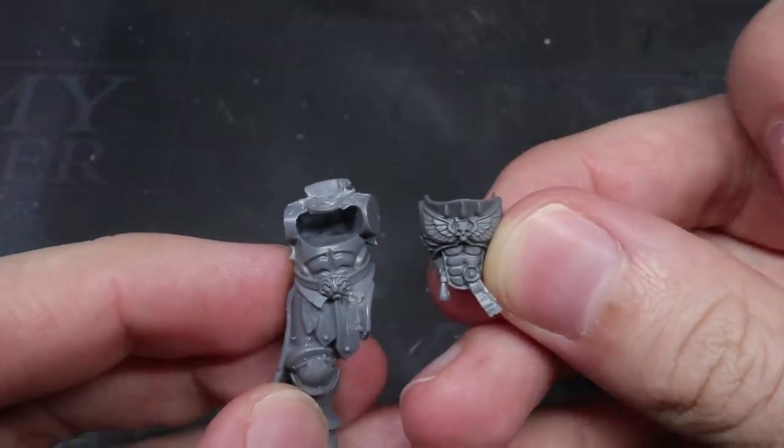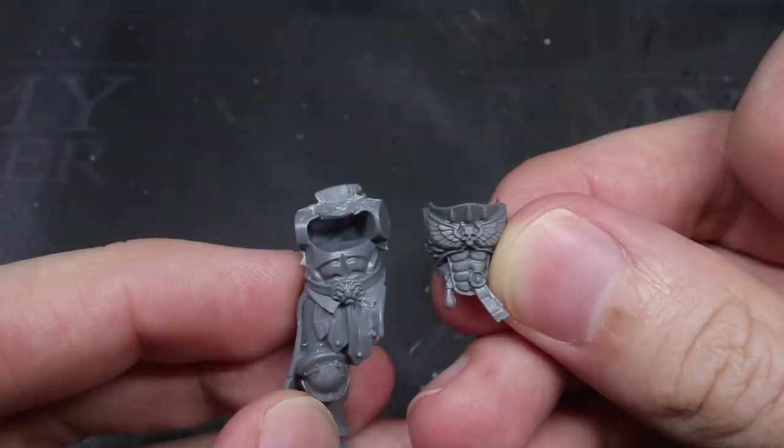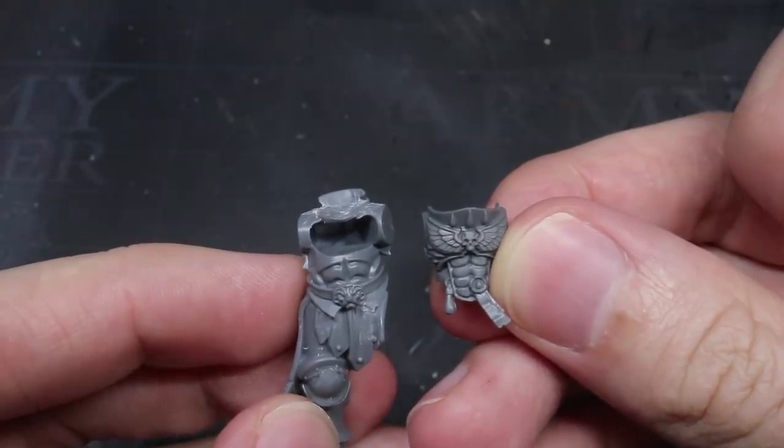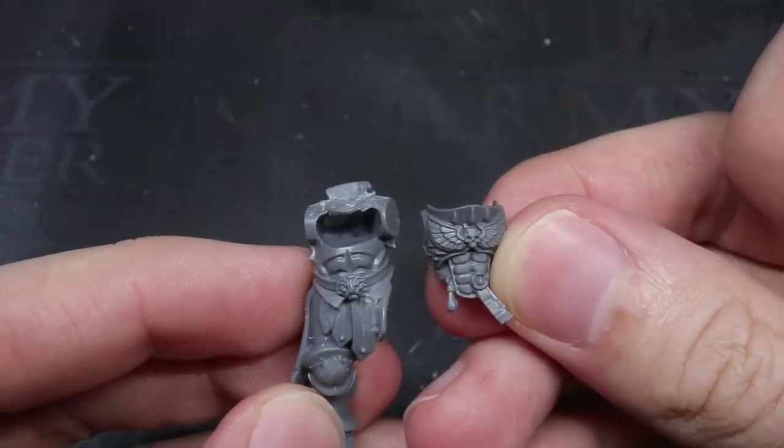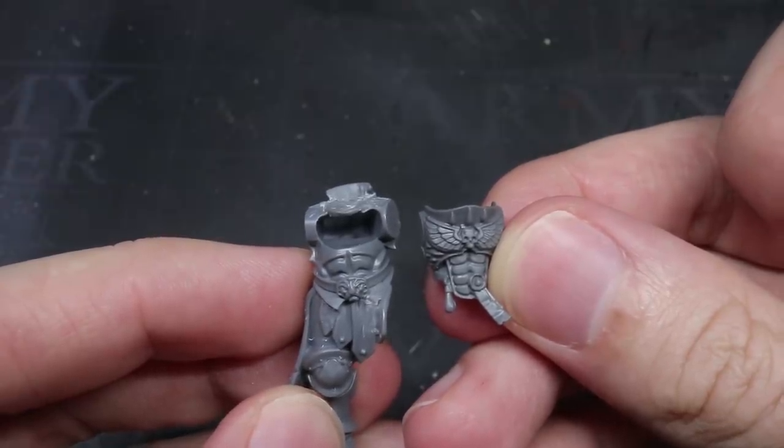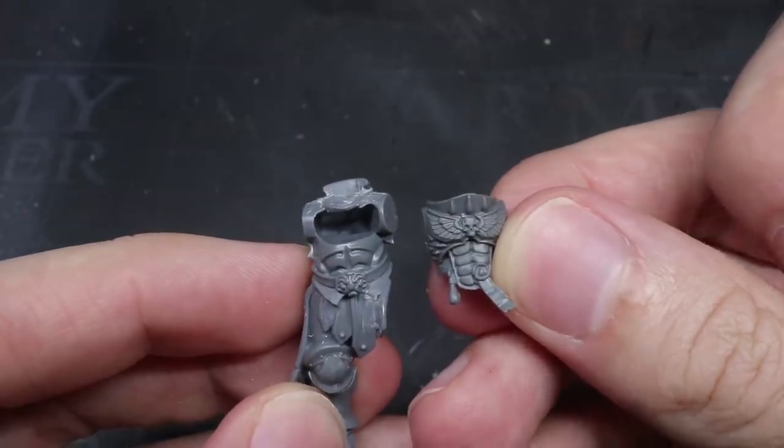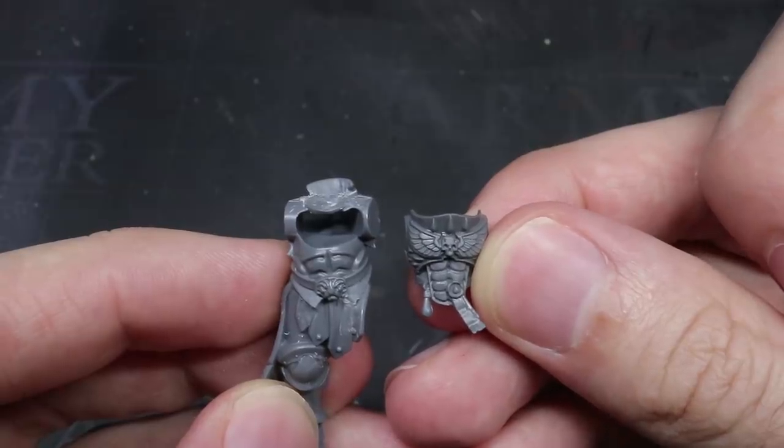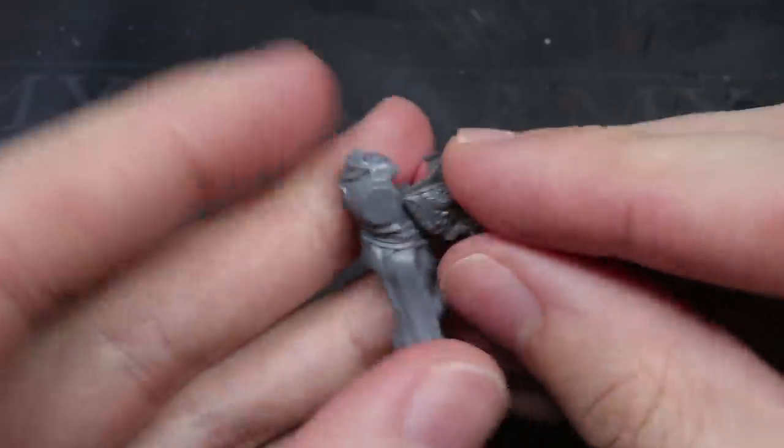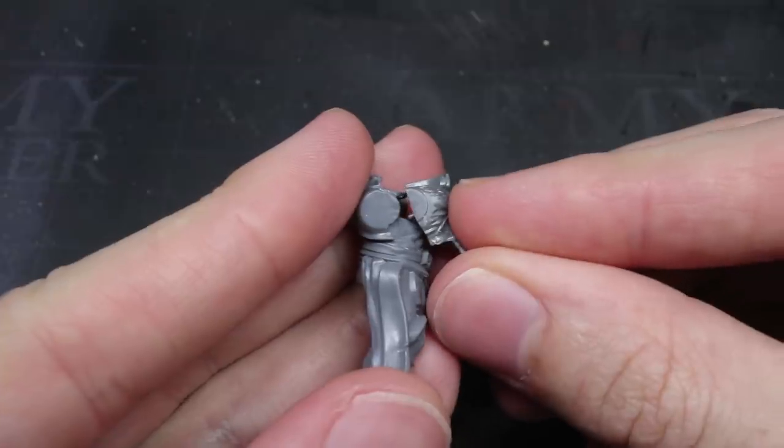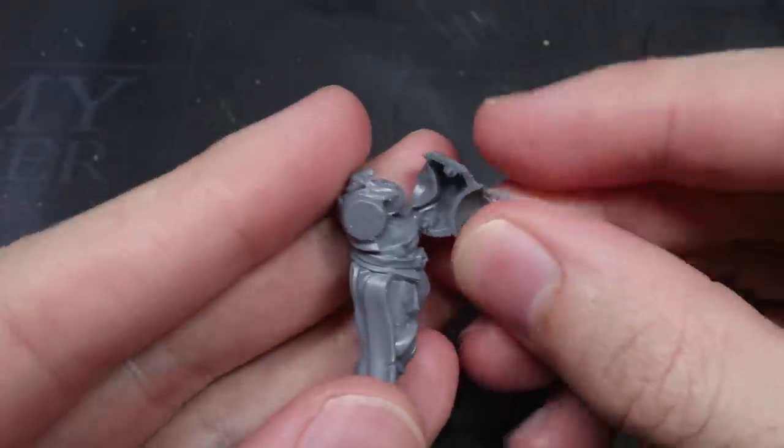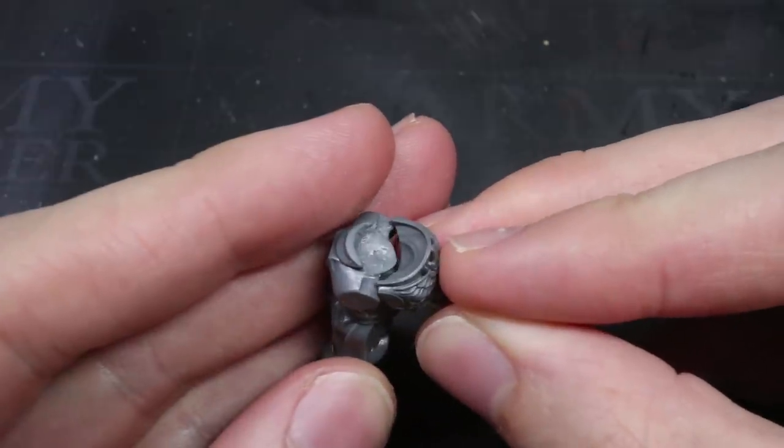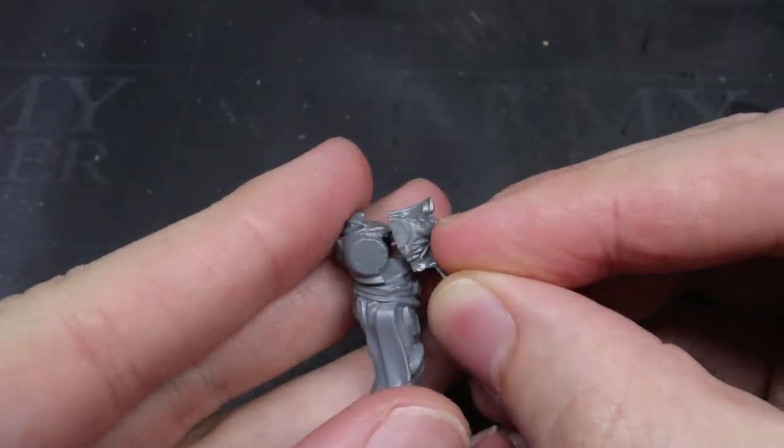As Dante's armour is very similar to that of the Sanguinary Guard, I next started to try and attach a torso plate to this prosecutor body. Now this wasn't going to be straightforward. It was going to require a lot of cuts and trims to get right but for a single one off character like this, it was definitely worth it. So I began by aligning the two halves together in order to identify where I would need to make the cuts. This would be an incremental task and would require me to repeat this measuring up a few times.